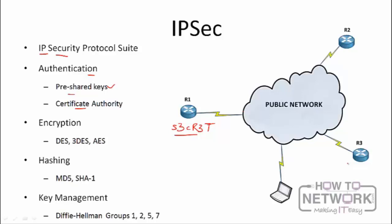Another authentication method is a certificate authority (CA). Router 1 and router 3 each have a connection to a CA, which may be in the public or private domain. The certificate authority is a trusted issuer of certificates, and it is these certificates that are used to authenticate between the two VPN endpoints.